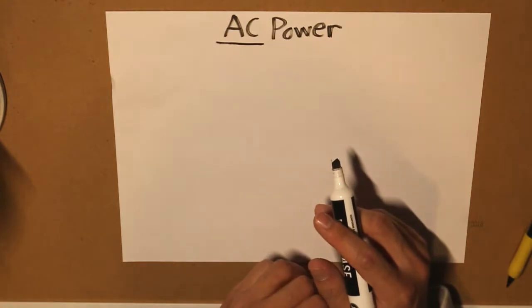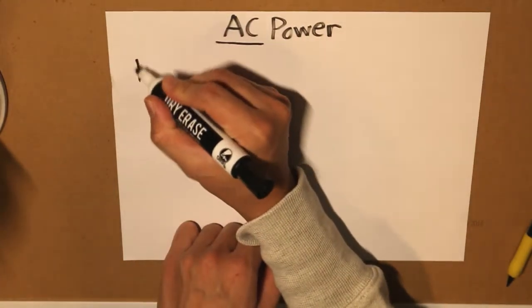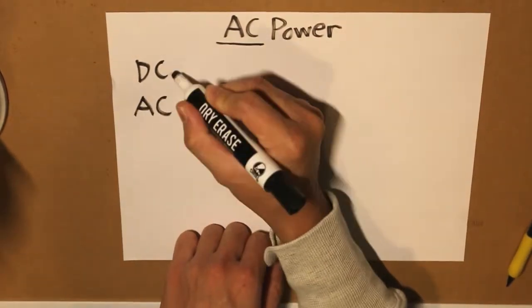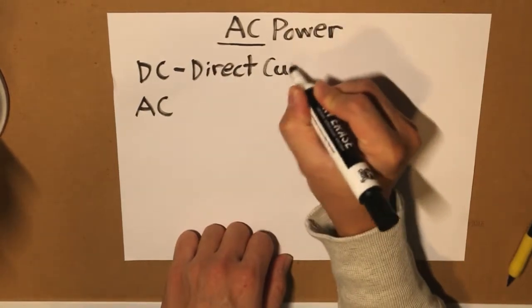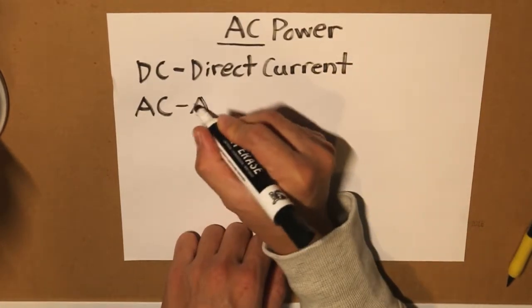We know that there's two different types of currents: DC and AC. DC meaning direct current and AC meaning alternating current.